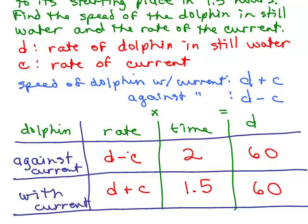Now this will give rise to two equations. The first equation will be against the current, the rate times the time equals distance. And the next one will be going with the current, the rate times time equals the distance. So put this on pause and see if you could write the two equations.